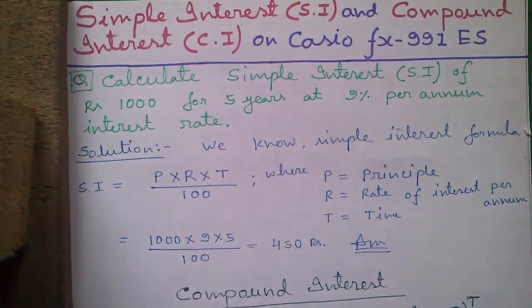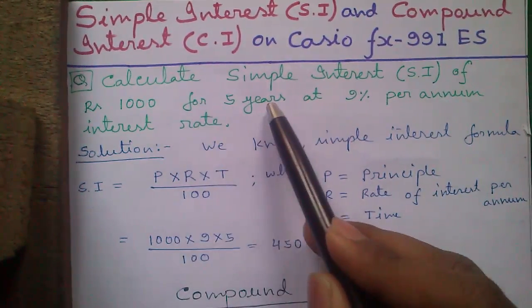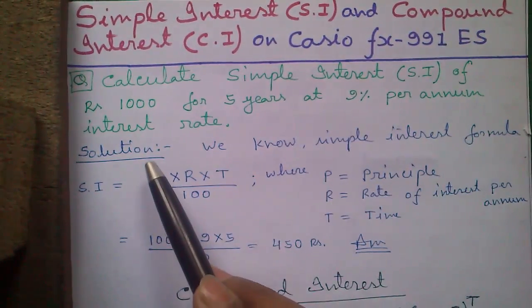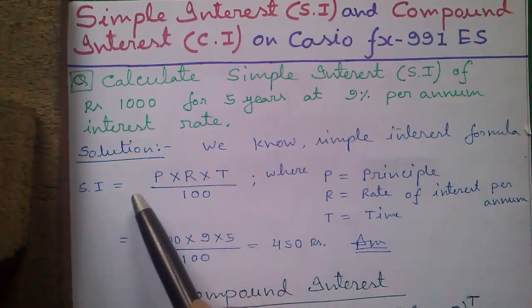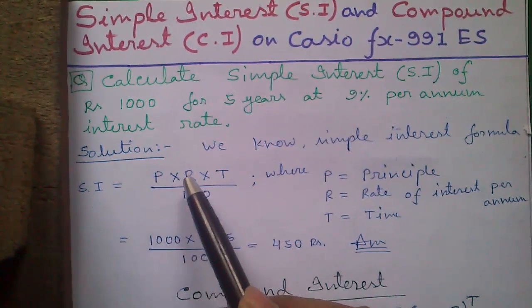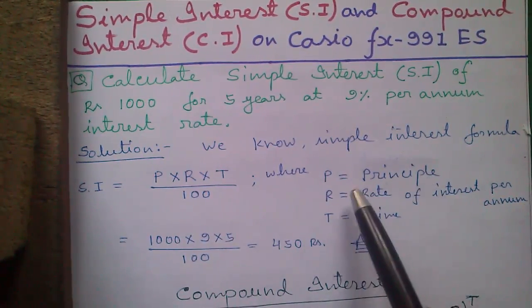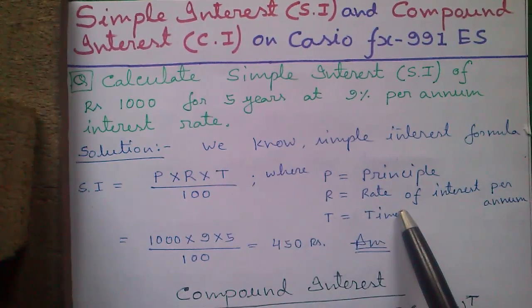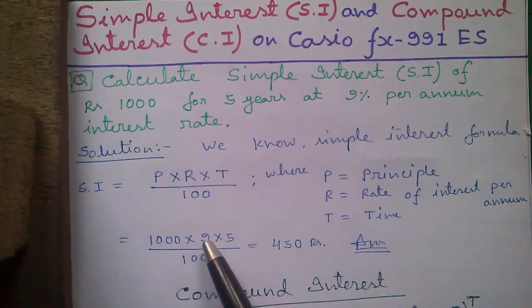Our first question: calculate simple interest (SI) of Rs 1000 for 5 years at 9% per annum interest rate. The simple interest formula is SI = P × R × T / 100, where P is the principal amount, R is the rate of interest per annum, and T is the time for which the money is invested.